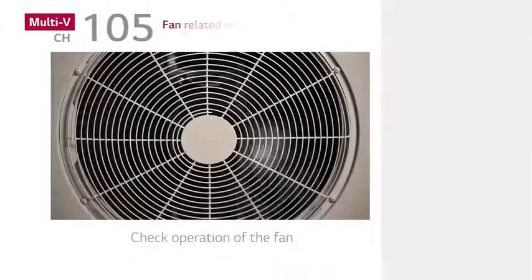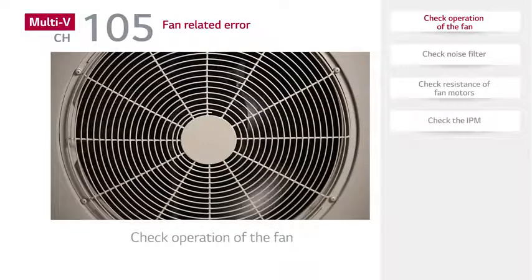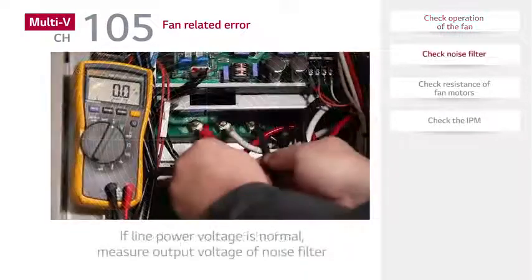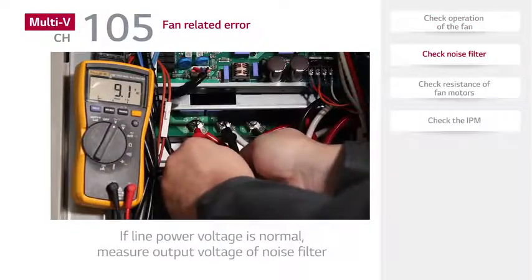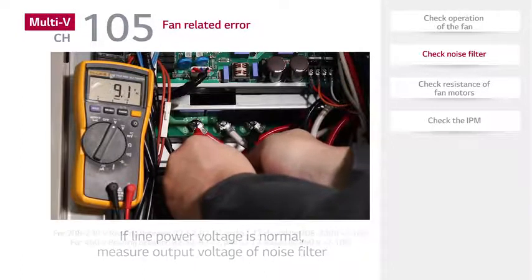If a CH-105 or CH-106 error occurs, first check operation of the fan. If there is nothing obstructing the fan and the fan turns, check the power supply status of the noise filter in the outdoor unit.